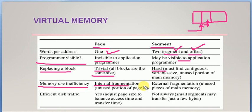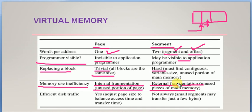Memory use inefficiency in paging has a chance of internal fragmentation, because there will be some unused portion of a page — even that small-size page will be partially wasted due to the size of data being stored. External fragmentation is a problem related to segmentation. Due to the placement of data, there will be some unused pieces of main memory from segments that cannot be accommodated by any other data, causing fragmentation and wastage of memory in both paging and segmentation.